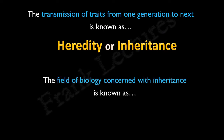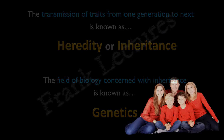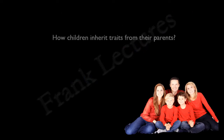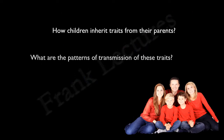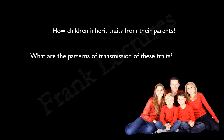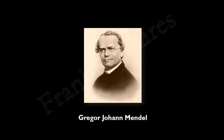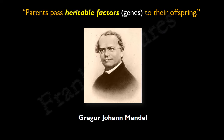And the field of biology concerned with inheritance is known as genetics. The science of heredity was a mystery before the discovery of DNA and chromosomes. How do children inherit traits from their parents? What are the patterns of the transmission of these traits? The answer to these questions and the fundamental principles of genetics were first worked out by Gregor Johann Mendel in the 1860s. He proposed that parents pass heritable factors to their offspring. Today, we know these heritable factors as genes.